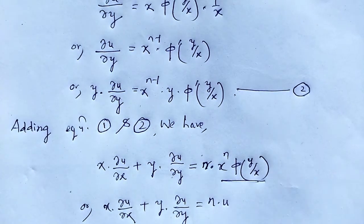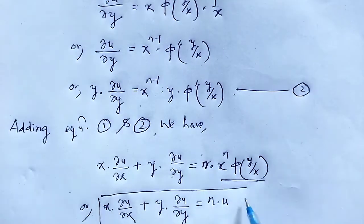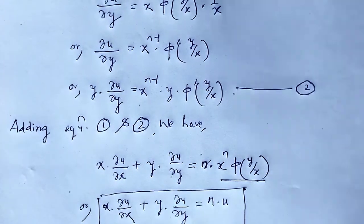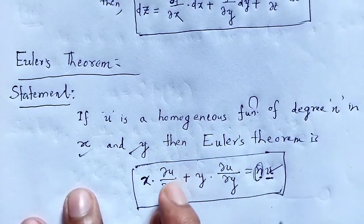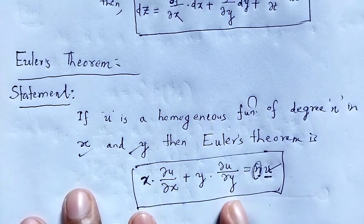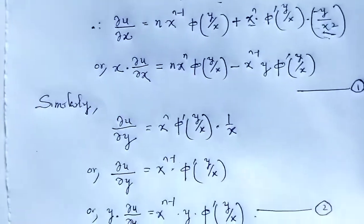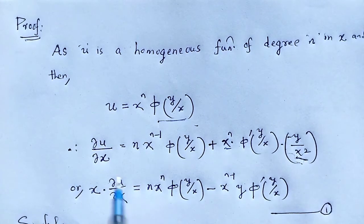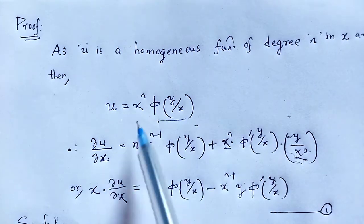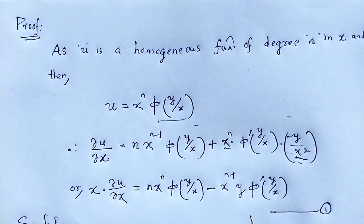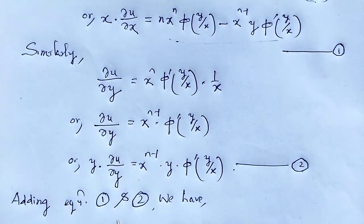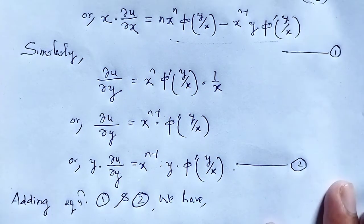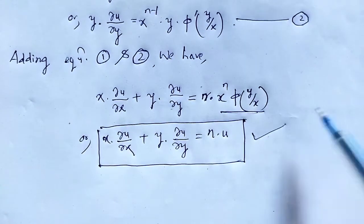This is nothing but x·(∂u/∂x) + y·(∂u/∂y) = n·u, since u = xⁿ·φ(y/x). This is the proof of Euler's theorem. In summary: as u is a function of degree n in x and y, written as u = xⁿ·φ(y/x), we differentiate with respect to x and multiply by x (equation 1), then differentiate with respect to y and multiply by y (equation 2), and adding them gives the result.